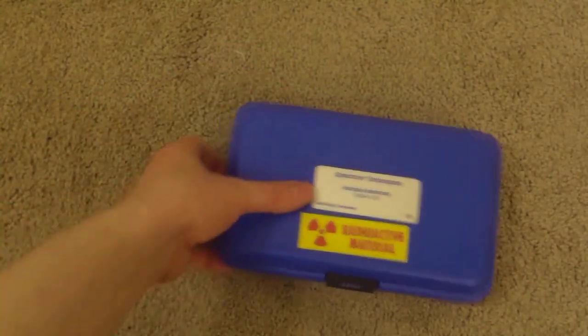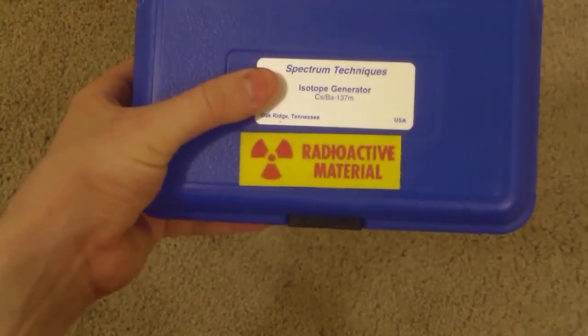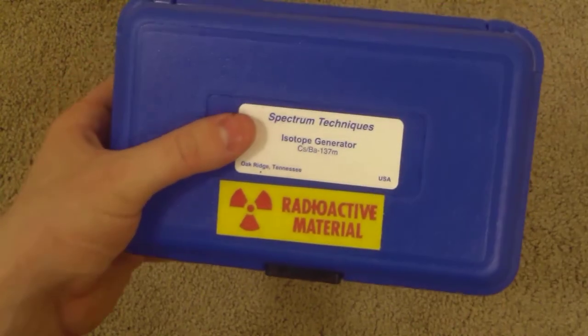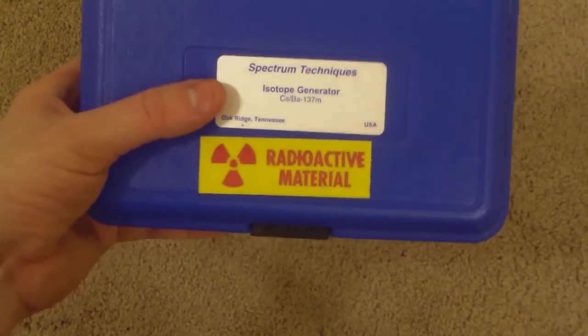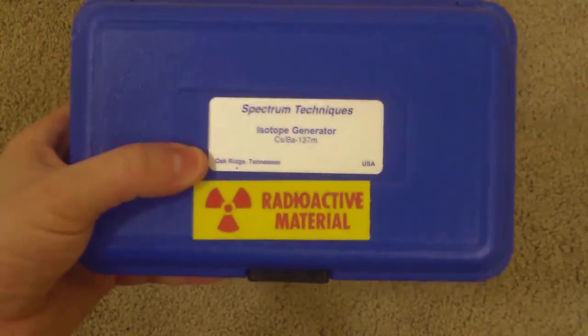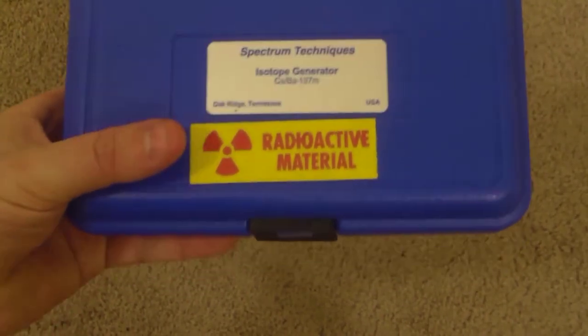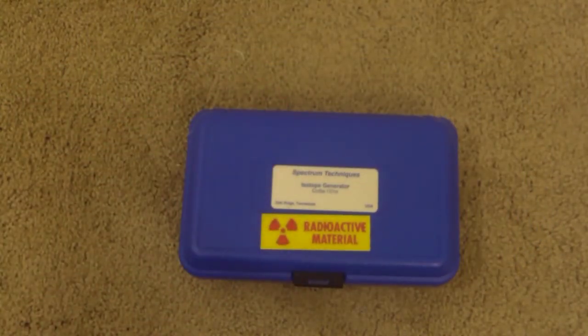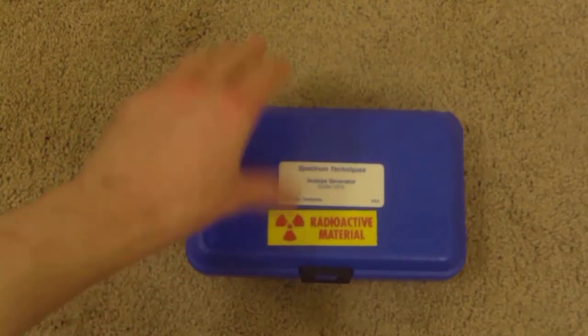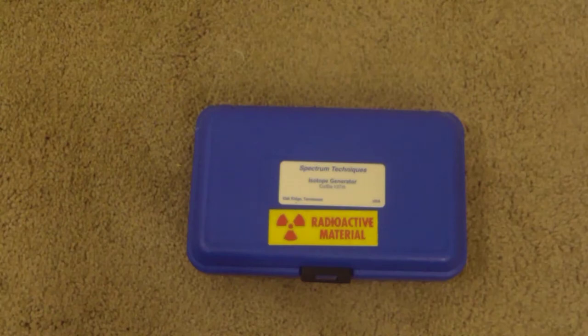All right, so let's see what you get here. This is the plastic container that holds the material. It says Spectrum Techniques Isotope Generator - could also call it a radionuclide generator. Cesium-137 to barium-137m, that's what it does. It's made in Oak Ridge, Tennessee, not by Oak Ridge National Laboratories mind you, by Spectrum Techniques. But still, Oak Ridge is like the radioactive hub of radioactive material. Of course, this is an exempt quantity, which means that the United States Nuclear Regulatory Commission says that the amount of activity, the number of decays per second in this particular device, is so low as to not cause any particular health hazard.